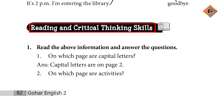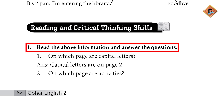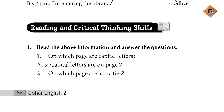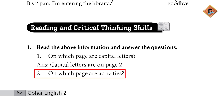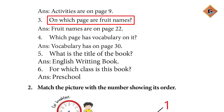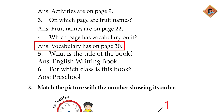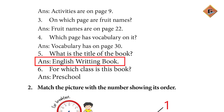Now, reading and critical thinking skills. Here is a picture and table of contents. Is picture ko dekhte hain, table of contents ko dekhte hain. Page 115 pe kuch questions ke jawab dene hain. On which page are capital letters? Page 2. On which page are activities? Page 9. On which page are fruit names? Page 22. On which page is vocabulary? Page 30. What is the title of the book? English Writing Book. For which class is this book? Preschool.